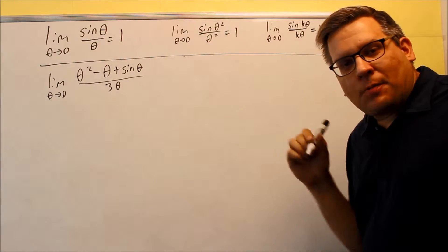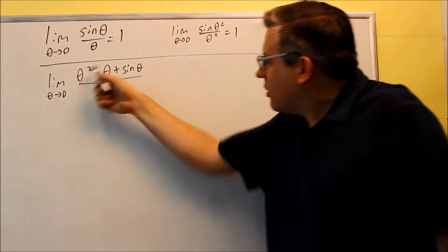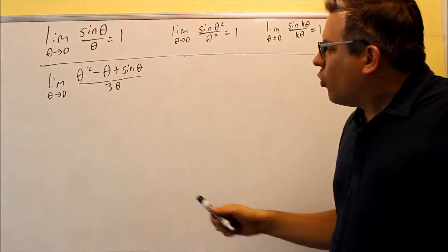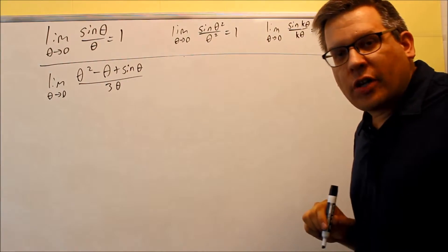Common technique that you're going to see coming up a lot in calculus is breaking fractions up. So if you have only one thing on the bottom, what you want to do is break this up into three different fractions.